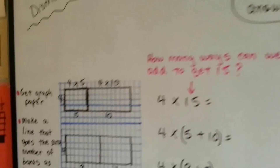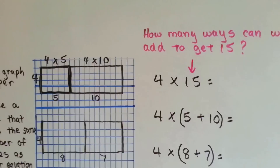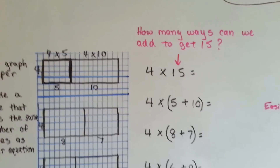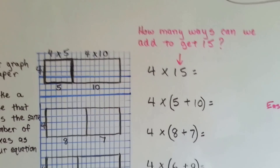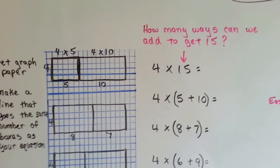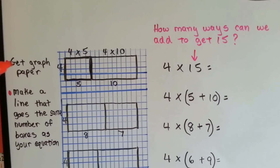So this would be called a partial product. It's a way of multiplying the ones, the tens, the hundreds separately, and then the products are added together at the end to get the final answer. Now let me show you something. I always found it fun to play with graph paper because I liked the little squares — maybe that's why I like geometry so much. And math.